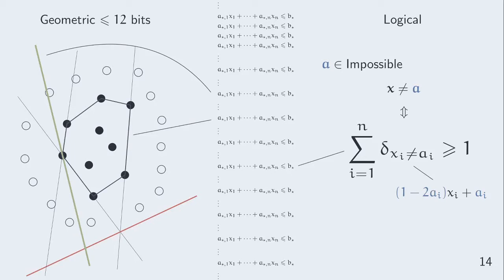Let's have a look at the geometric method. On this drawing, black dots are possible points and white dots are impossible points. Black lines represent the convex hull of possible points. Computing the convex hull becomes too hard when the number of variables exceeds 12.